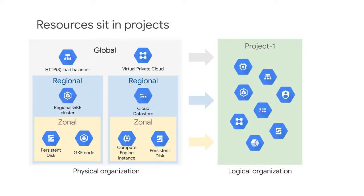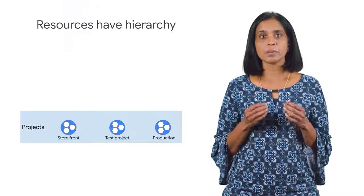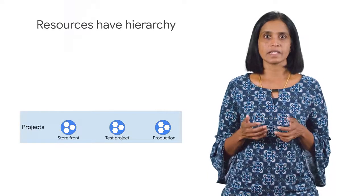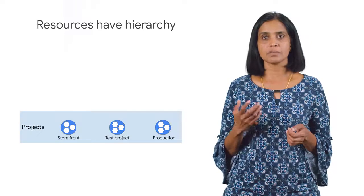The GCP resources you use, no matter where they reside, must belong to a project. A project is the base level organizing entity for creating and using resources and services, and managing billing, APIs, and permissions. Zones and regions physically organize the GCP resources you use, and projects logically organize them. Projects can be easily created, managed, deleted, or even recovered from accidental deletions. Each project is identified by a unique project ID and project number. You can name your project and apply labels for filtering. These labels are changeable, but the project ID and project number remain fixed.